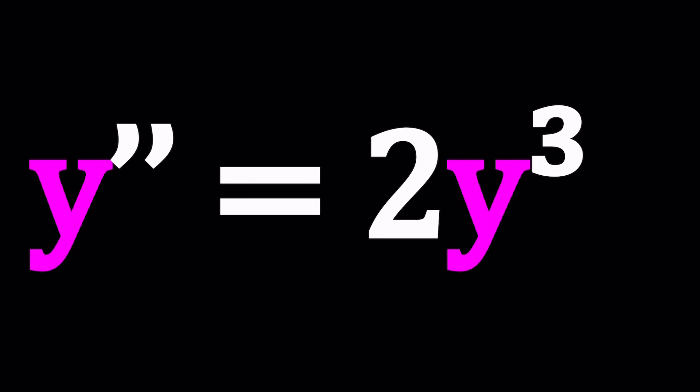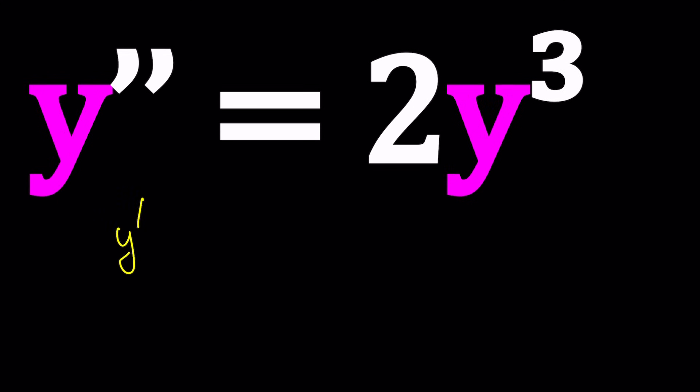Why did I say this is a difficult equation? Because instead of y double prime, if we had y prime, like if we had y' = 2y³, this would be easy. We could write this as dy/dx and then it's separable. There's not even an x in the equation, but dx will come up and we can just solve it.